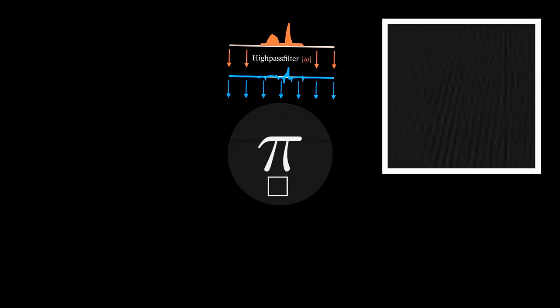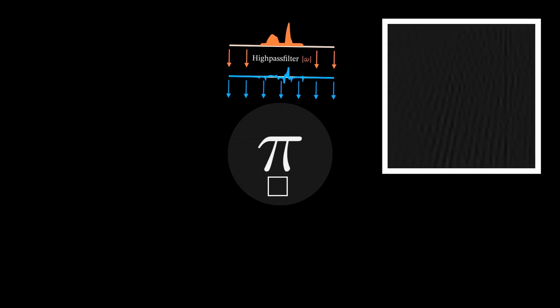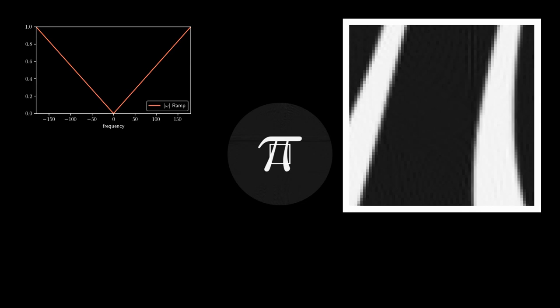To reduce these stripe artifacts a bit, one can use the Shepp-Logan filter, which reduces the high frequencies a bit, and therefore gives a better image.